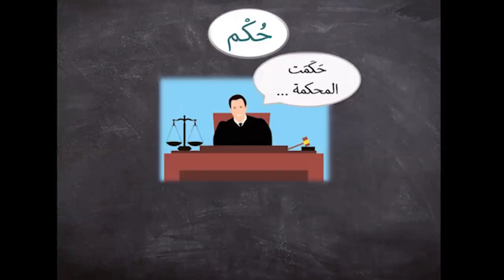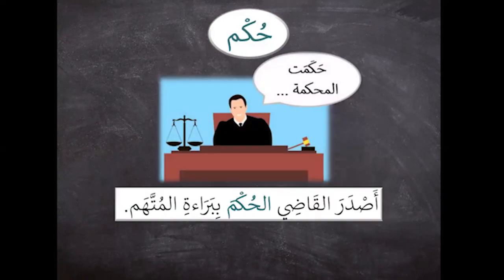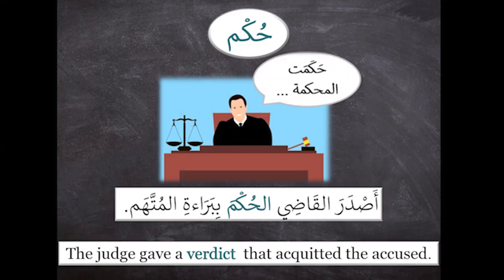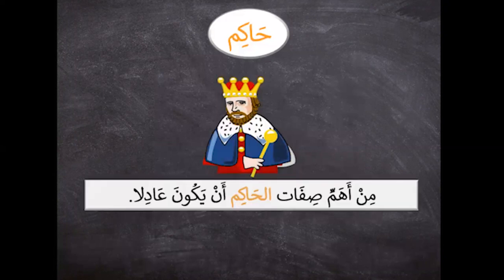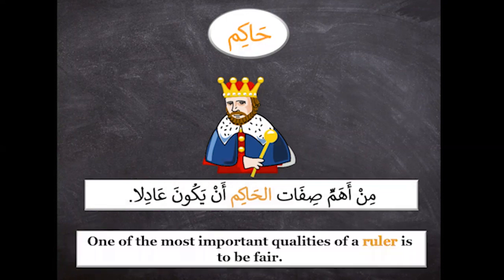حكم — أصدر القاضي الحكم ببراءة المتهم. (The judge issued a verdict of innocence for the accused.) حاكم — من أهم صفات الحاكم أن يكون عادلاً. (One of the most important qualities of a ruler is to be just.)